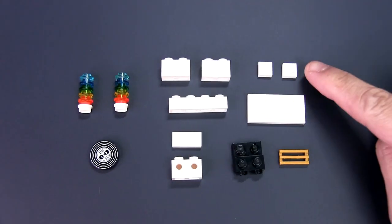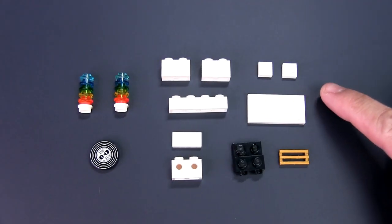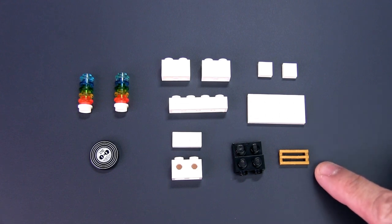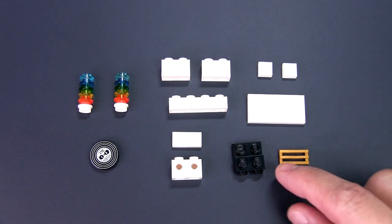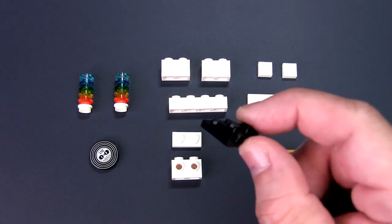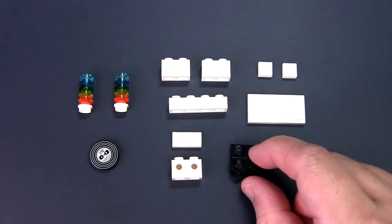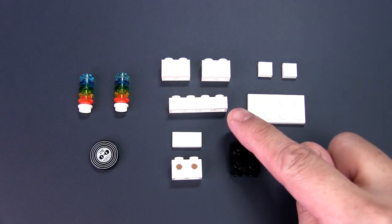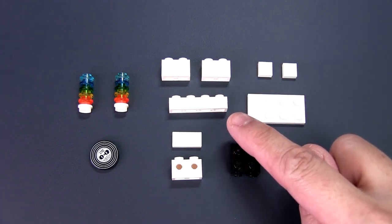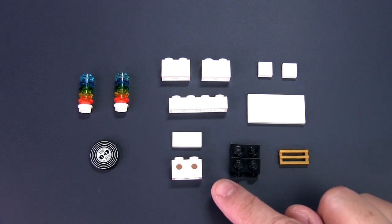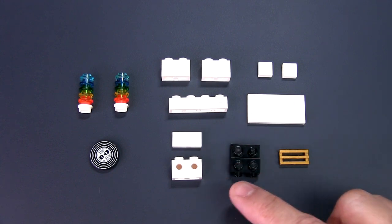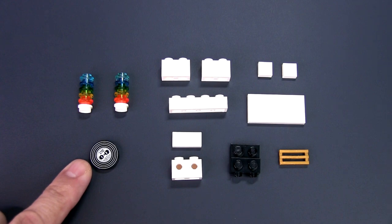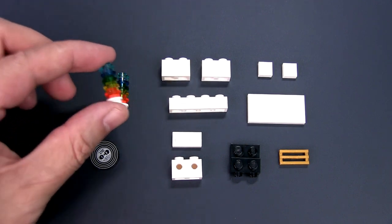For the bottom half, you need 2 1x1 plates, a 2x4 plate, a 1x2 grill piece, a 2x2 modified plate with a half step, 2 1x2 bricks, a stack of 2 1x4 plates, a 1x2 plate, a 1x2 modified brick with studs on the front, a 2x2 decorated round tile like a record, and 2 stacks of 1x1 round studs. You need 6 studs in each stack.